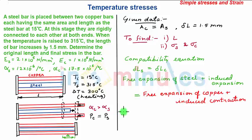However, the formula does not change. We have free expansion of steel as alpha_S delta T times L plus sigma_S L upon E_S equal to alpha_C delta T times L plus sigma_C L upon E_C.